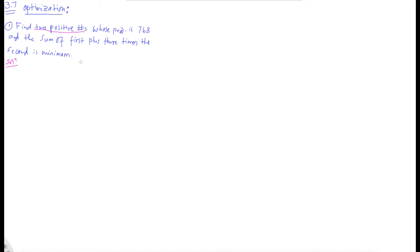Today we're starting Section 3.7 from the book — optimization problems. Optimization is basically minimization or maximization, but we'll see some word problems. Let's start with Example 1.